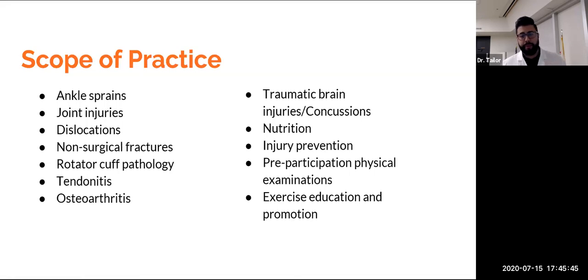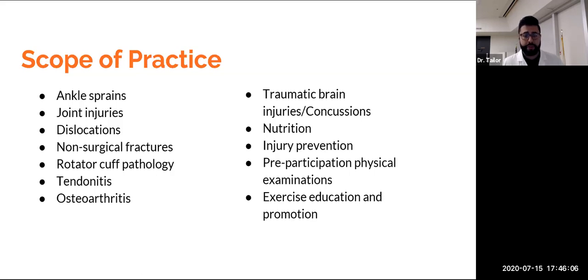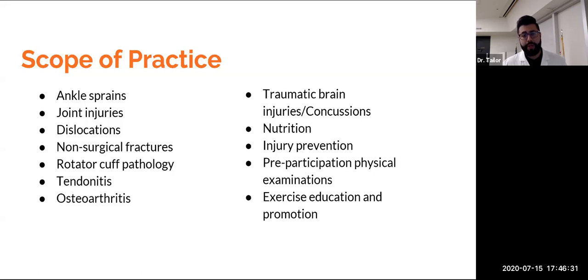The scope of practice: simple ankle sprains, joint injuries, knees — literally every joint in the body. Dislocations, post-dislocation rehabilitation and management. Non-surgical fractures — there are fractures like stress fractures that heal quite well without surgery. Obviously there are surgical fractures that must be repaired right away. Rotator cuff pathology — very common. Statistically, 50% of people over age 66 have rotator cuff tears on both shoulders. Tendinitis — tendons connect muscle to bone and can get inflamed. Osteoarthritis is wear and tear arthritis; it's not rheumatoid. Traumatic brain injuries and concussions — primarily football players and athletes evaluated and cleared in the clinic.